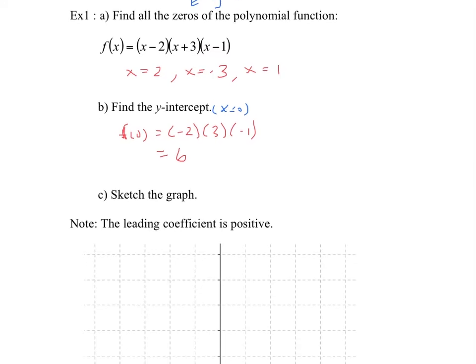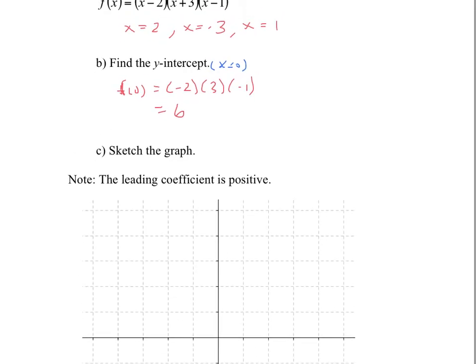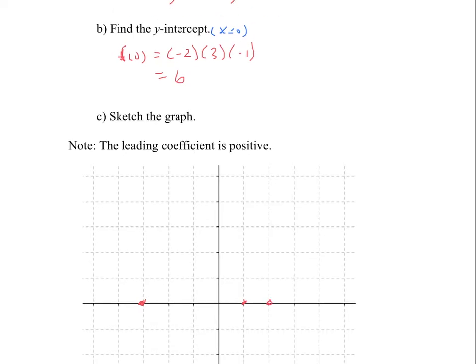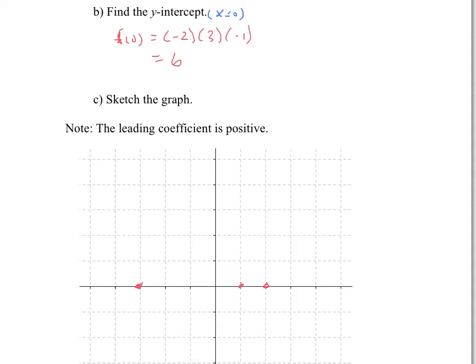That's enough information to sketch my graph. I'll put in all my zeros at negative three, two, and one. And we also have a y-intercept at y equals six. The scale doesn't really matter here, so I'm going to sketch the graph and add the six in after.